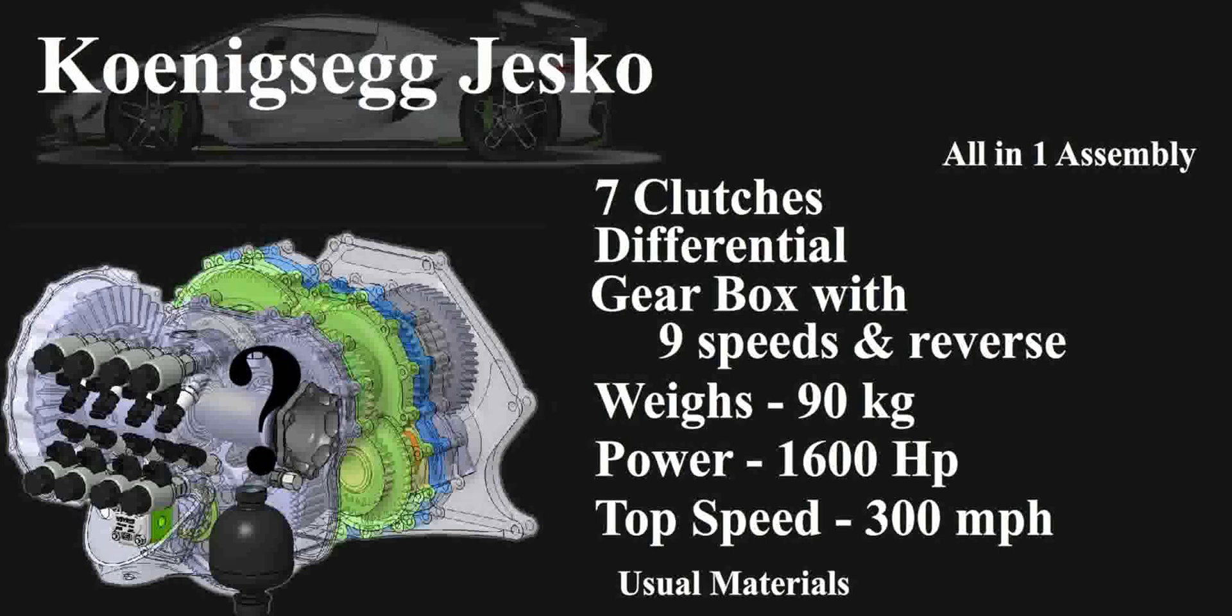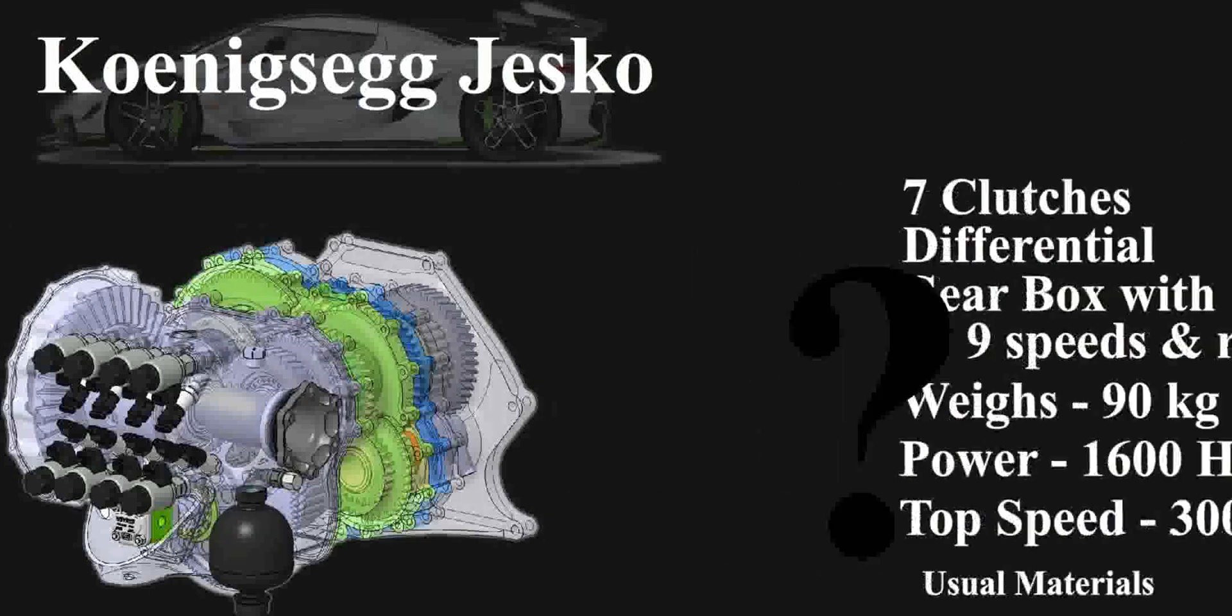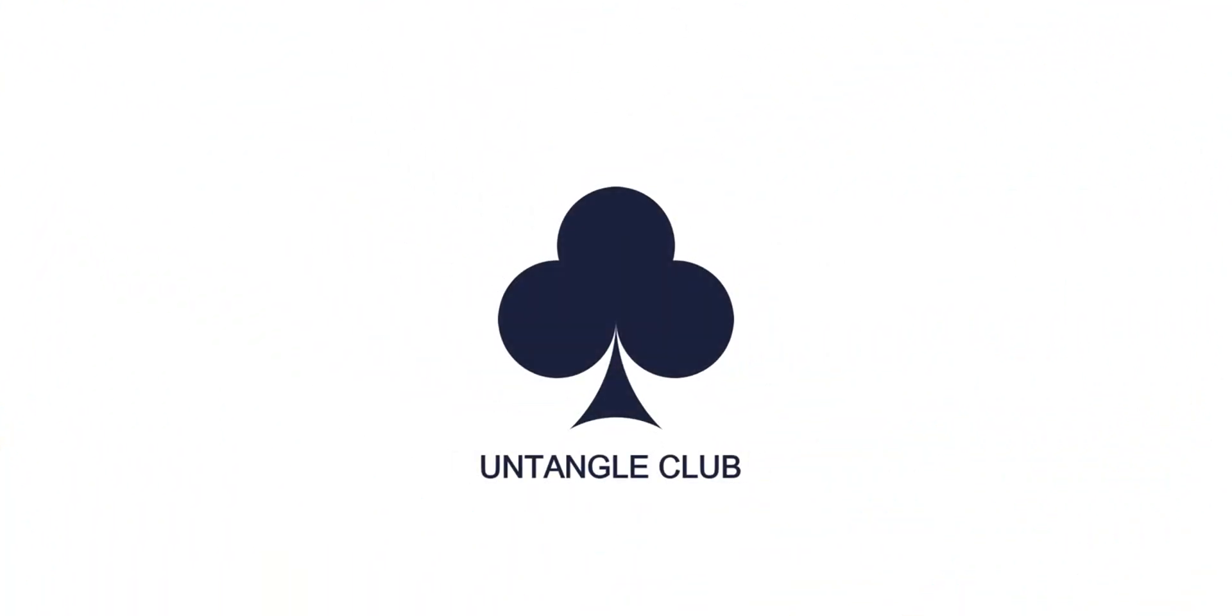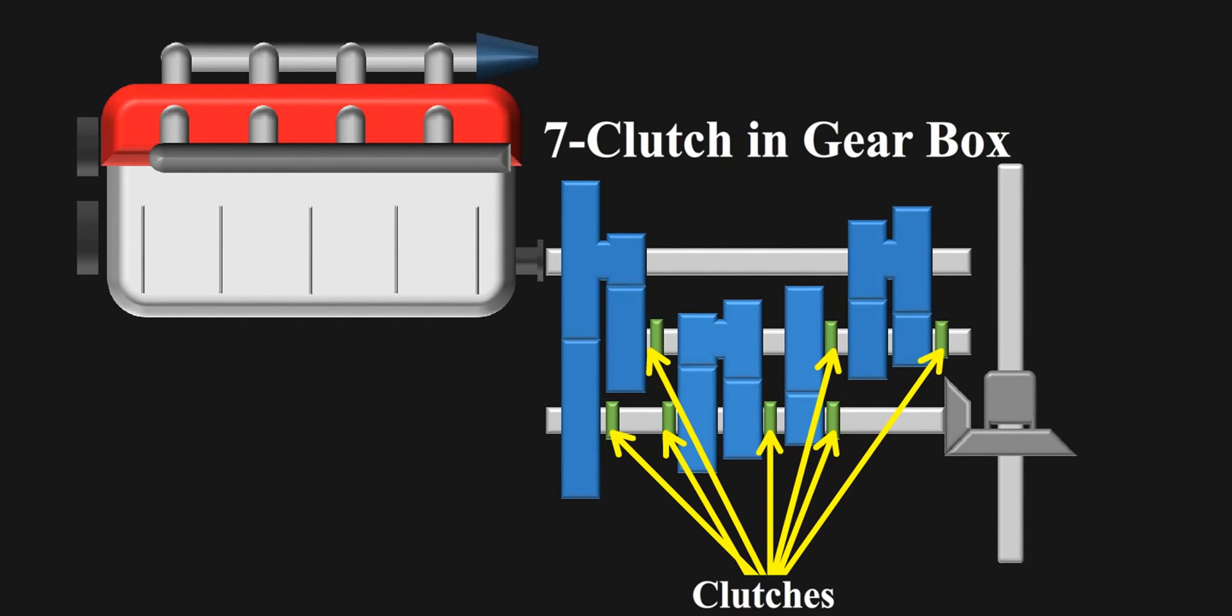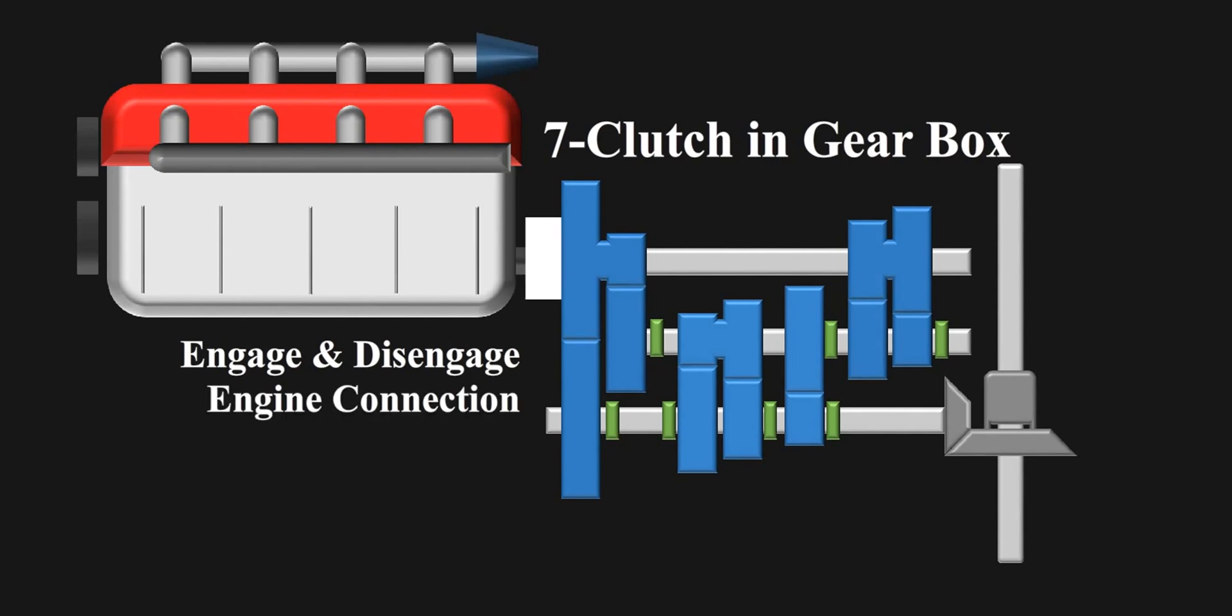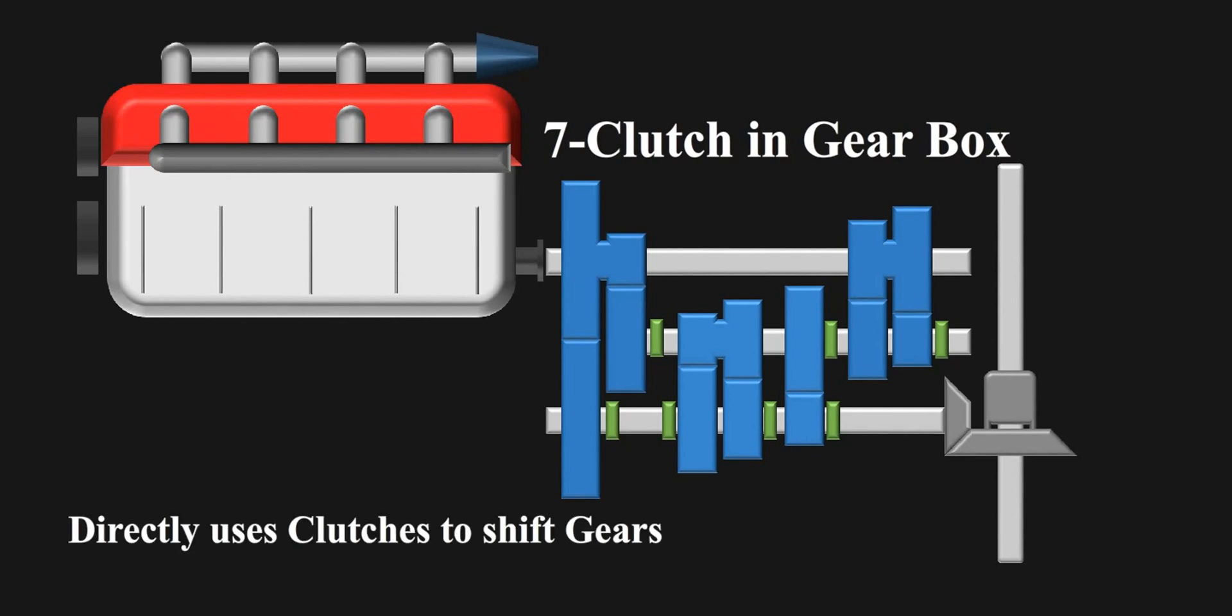So, how does this transmission work? Let's untangle in this video. The system has 7 clutches in gearbox. The clutches are used here in a different way. Rather than using a clutch just to engage and disengage the engine connection and relying on synchronizers to shift gears, this system directly uses clutches to shift gears to decrease the shift delays even more.